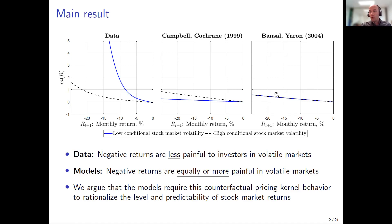What we're going to do with this conflicting evidence is argue that these models rely on this behavior in order to explain both the equity premium and return predictability. I'll try to argue that if the behavior weren't there, the models would not be able to explain these things.